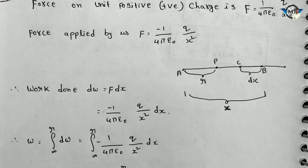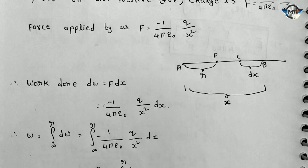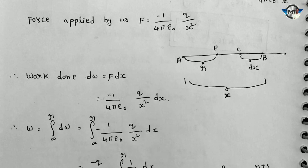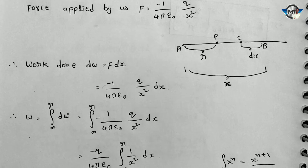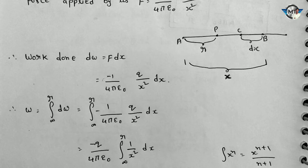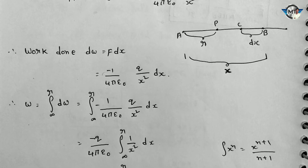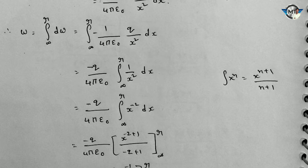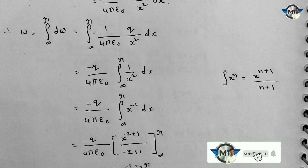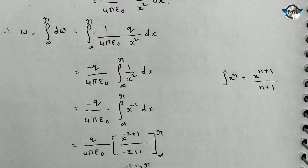So dw is equal to f dx. Therefore W is equal to integral from infinity to r of dw. We will do differentiation with W. In classical mechanics, here it is f dx, and f is equal to 1 by 4 pi epsilon naught q by x squared. So we substitute here, giving minus q by 4 pi epsilon naught outside, with the remaining 1 by x squared dx.